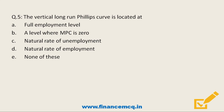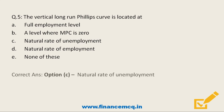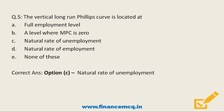Moving on: The vertical long-run Phillips curve is located at — Option A: Full employment level, Option B: A level where MPC is zero, Option C: Natural rate of unemployment, Option D: Natural rate of employment, Option E: None of these. The correct answer is Option C — natural rate of unemployment. The natural rate of unemployment is the rate when the labor market is in equilibrium; it is caused by supply-side factors such as structural unemployment or frictional unemployment.